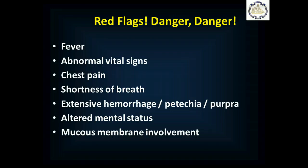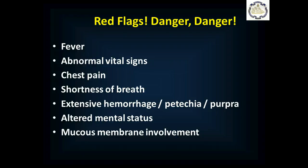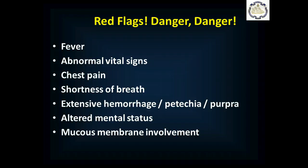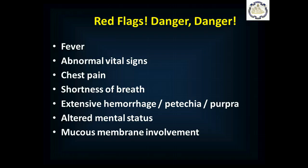So you've now done a pretty good history and exam, and you need to know if you need to be worried. These are things that should get you very worried: if the patient has a fever or abnormal vital signs, chest pain or shortness of breath, hemorrhage all over the body in multiple spots, or you're seeing petechiae or purpura — those can be signs of benign disease like a local vasculitis, but they can also be signs of meningitis. Anyone with a rash and altered mental status, particularly if there's any history of headache associated with that. And if the mucous membranes are involved, that's concerning as well — it suggests more systemic disease. If you see any of these red flags, get in touch with medical control.